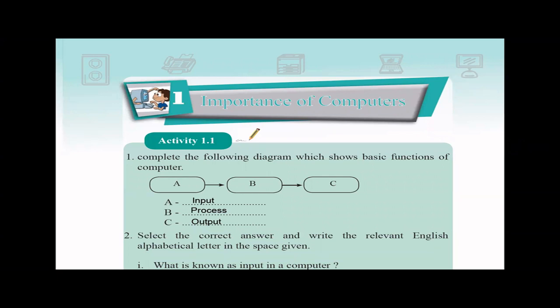They have given you a diagram asking to complete the following diagram which shows basic functions of a computer. I hope you remember, in the computer first you have to give the input, then the processing will happen, then finally you can see the output. So A will be input, B will be process, and C will be the output.